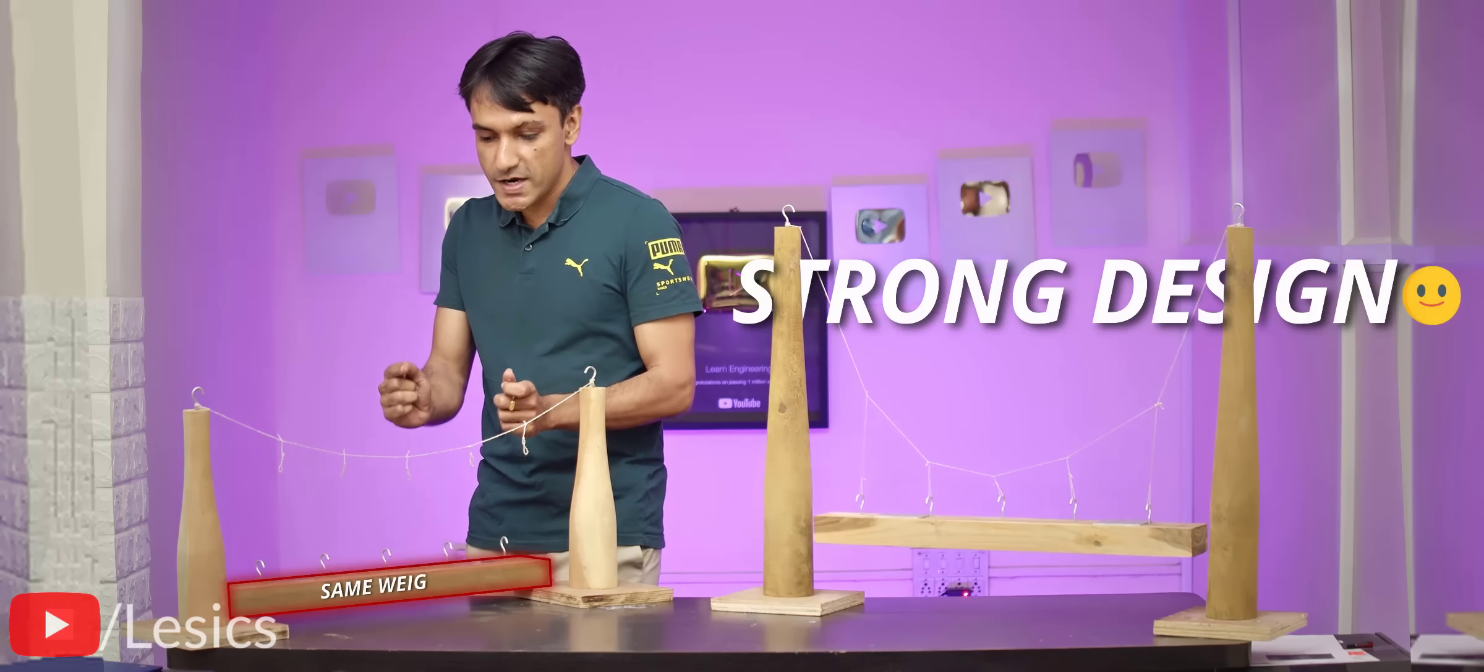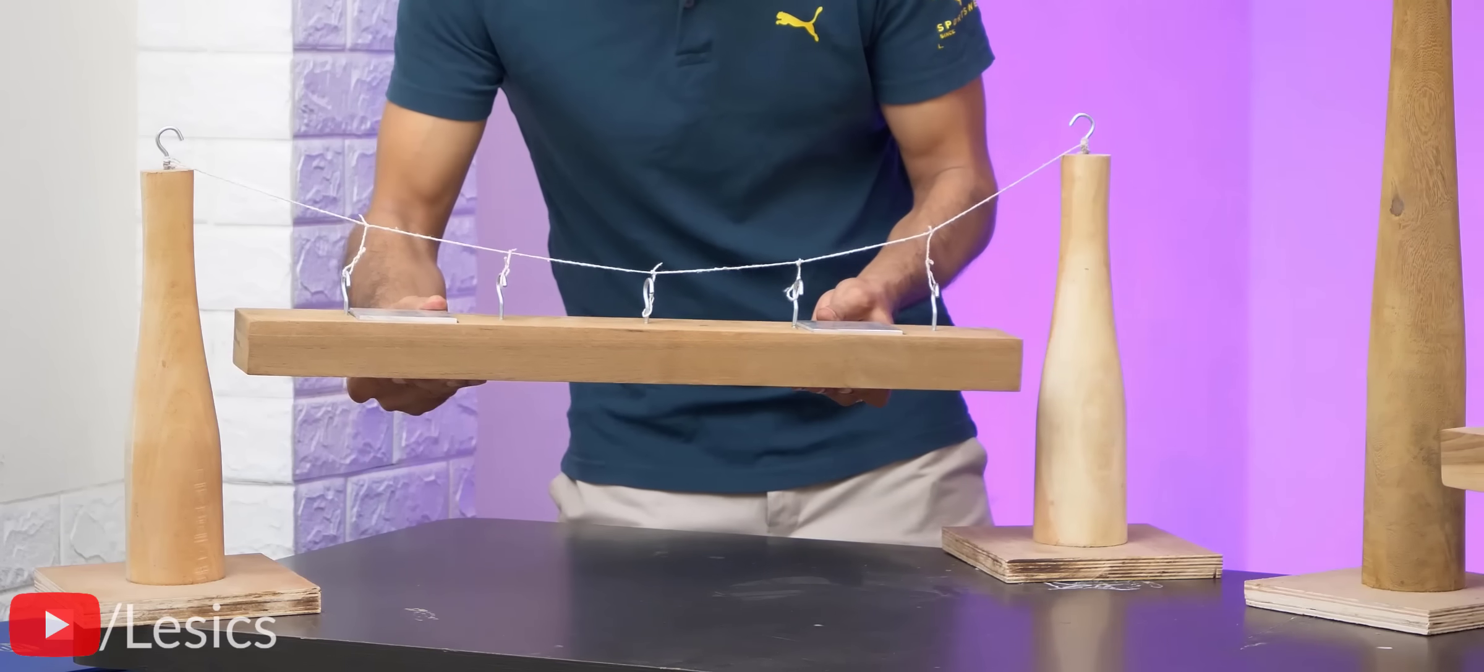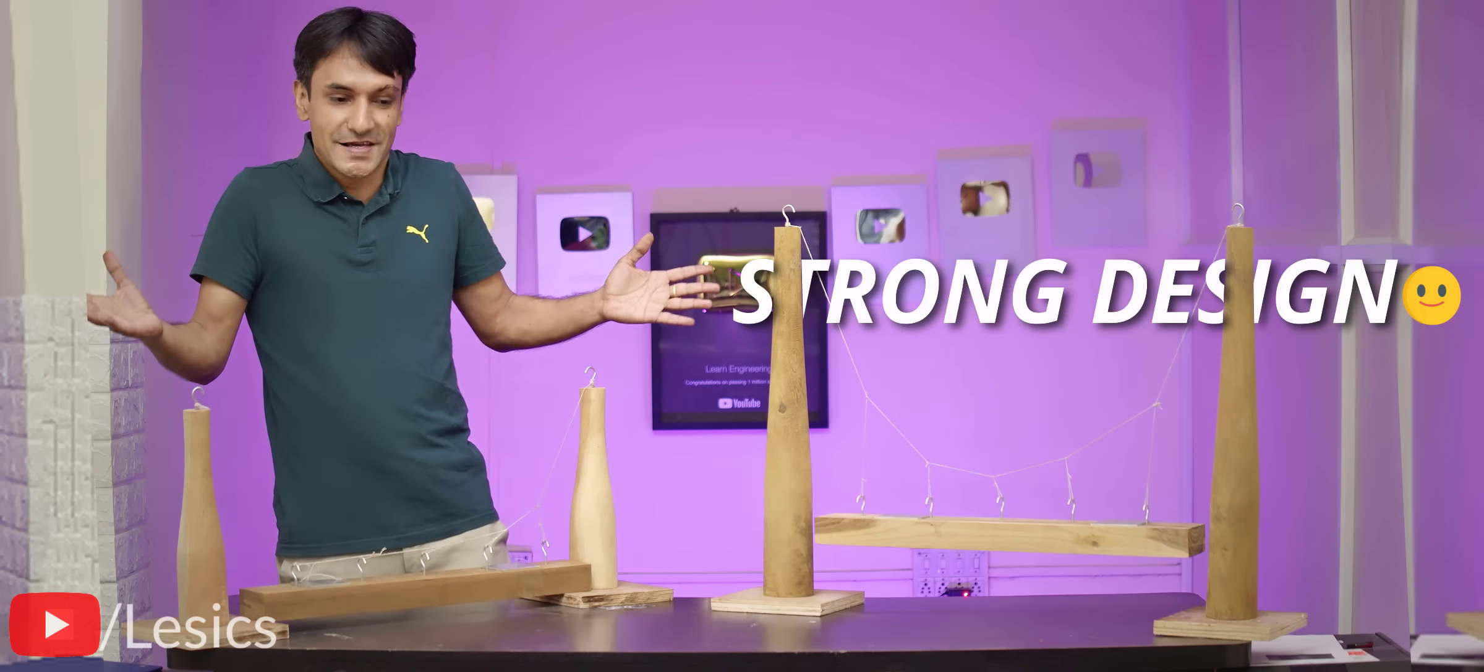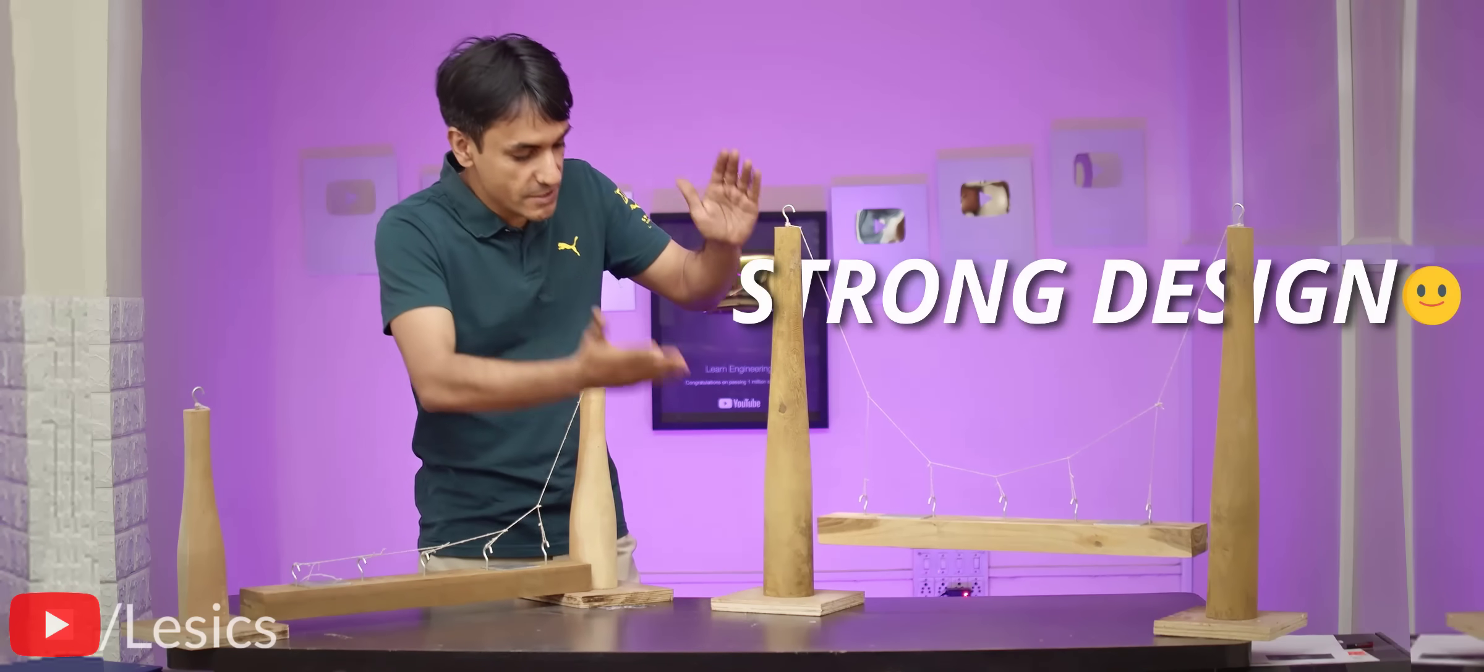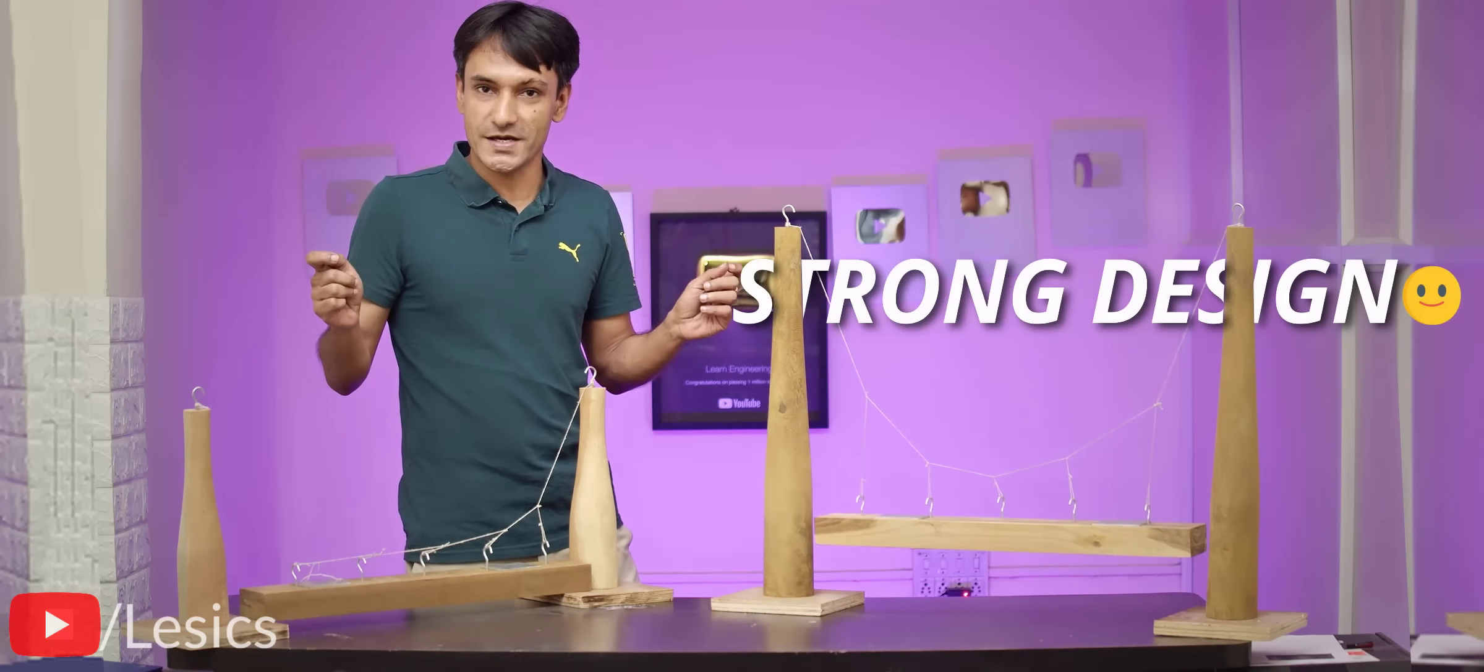Now, let's attach the same weight to the next design, the short tower design. This bridge went for a sudden failure. I couldn't even react to that. So in short, we proved experimentally that tall tower design is the best for a suspension bridge. It's more strong. The question is why?